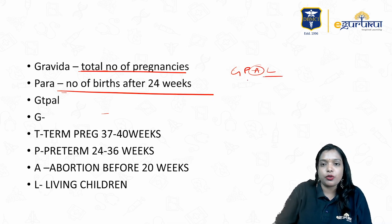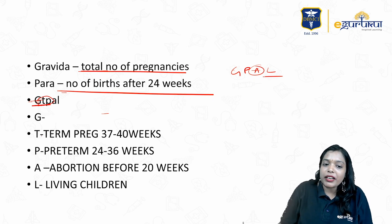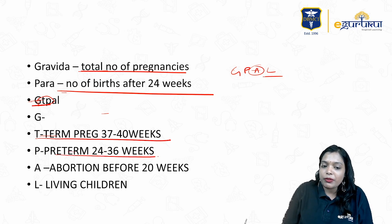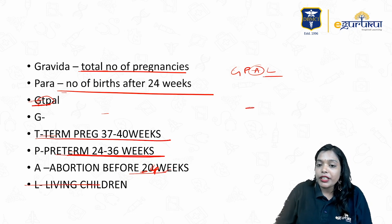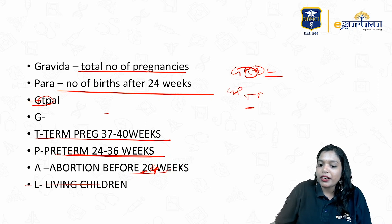In G-T-PAL, instead of Para, you write term or preterm. Pregnancies that delivered at 37 to 40 weeks come under term. Those delivered between 24 to 36 weeks come under preterm. Any pregnancies ending before 24 weeks come under abortion. L is living children. So in G-T-PAL, you replace Para and express it further as term, preterm, abortion, and living.